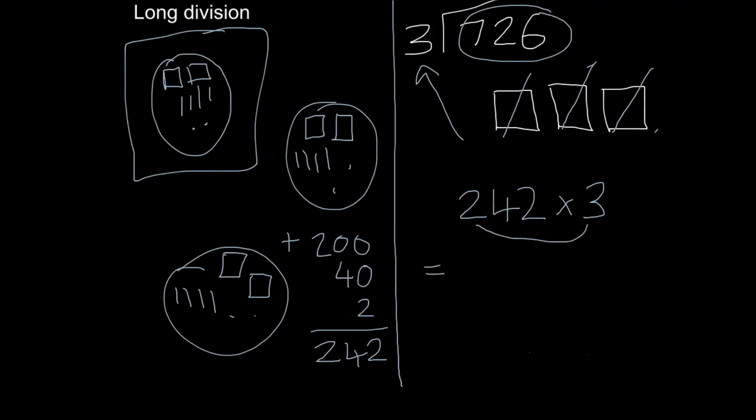So 3 times 200 equals 600, 3 times 40 equals 120, and 3 times 2 equals 6. And if I add those up: 600 plus 120 plus 6 equals 726.